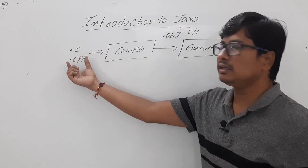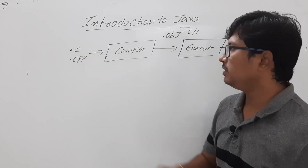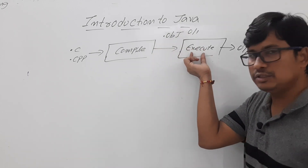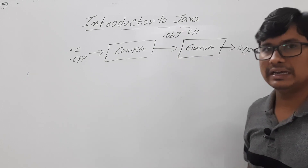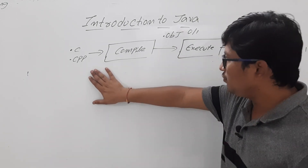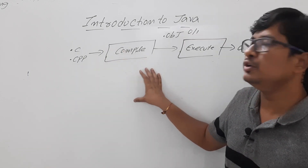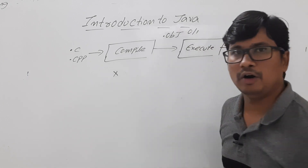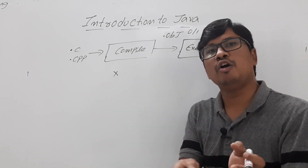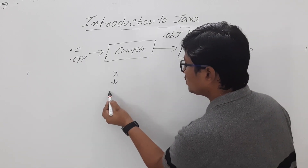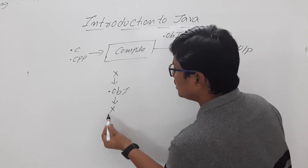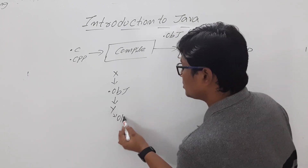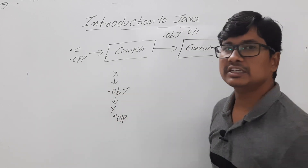For example, if you write an add.c program and compile it, you get an add.obj file. Executing that add.obj file gives the output. The limitation is that if you compiled this program on platform X — where platform means a combination of operating system and hardware — you can only execute the obj file on platform X. If you change to platform Y, you will not get the output. This is the key limitation of C and C++, which Java overcomes.